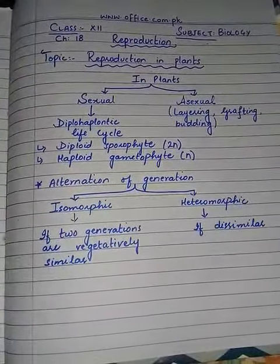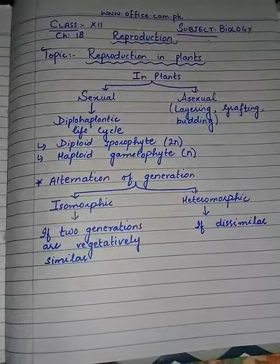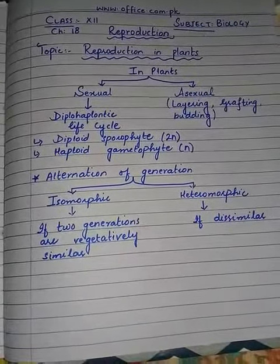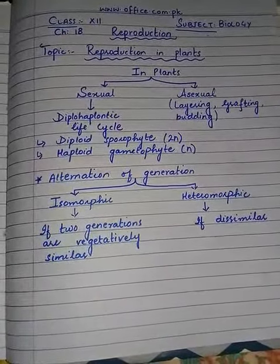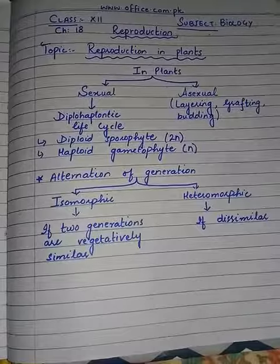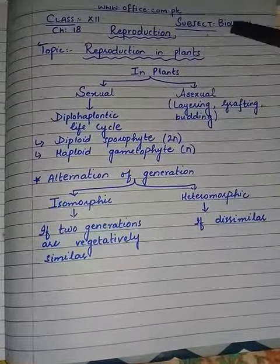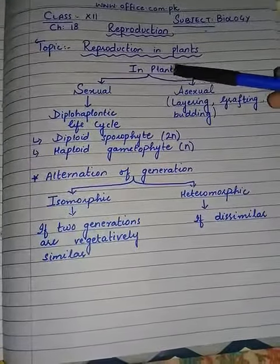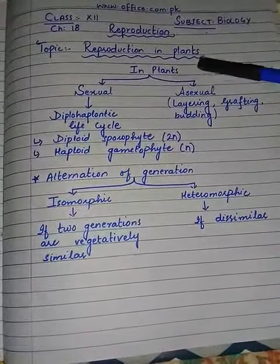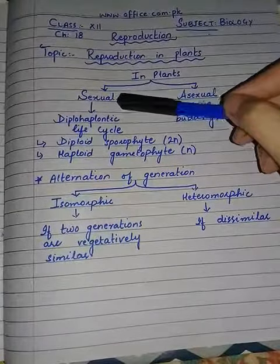Asexual reproduction requires only one parent, and sexual reproduction requires two parents. The same is the case with plants — in plants we can see both asexual and sexual reproduction.